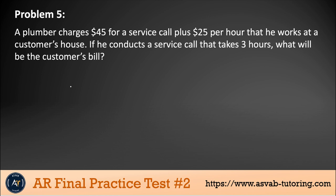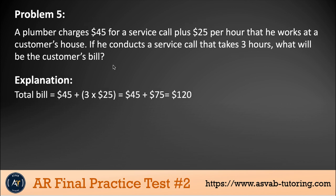This is an interesting problem. Problem number 5: a plumber charges $45 for a service call plus $25 per hour that he works at a customer's house. If he conducted a service call that takes 3 hours, what will be the customer's bill? The $45 is a one-time fee. Many people get confused and add them together then multiply by 3 — that's not correct. Multiply $25 times 3, which gives you $75, then add the one-time fee: 75 + 45 = $120.